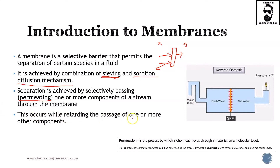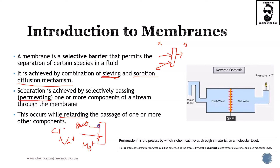Separation occurs while retarding or literally avoiding the passage of one or more other components — it doesn't necessarily have to be slow. For example, in a sieving system, if you focus on monovalent ions such as sodium, magnesium, or chlorine, and you have a DNA strand — which is huge compared to these molecules — the DNA will not feed through pores of the size of one atom. DNA contains lots of atoms and molecules bonded together, so retarding isn't the right concept here; it literally will not permeate.